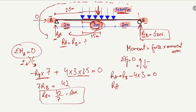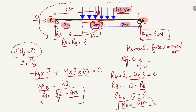Shifting RB to the right side: RA equals 12 minus RB. Since RB is 6 kN, substituting gives RA equals 12 minus 6, which equals 6 kN. So RA equals 6 kN. In this way we have found both support reactions: RA equals 6 kN and RB equals 6 kN.